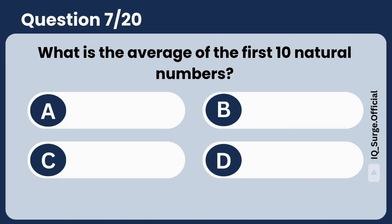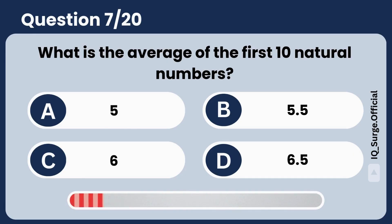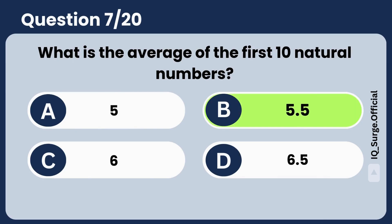What is the average of the first 10 natural numbers? Answer: 5.5. Great job.